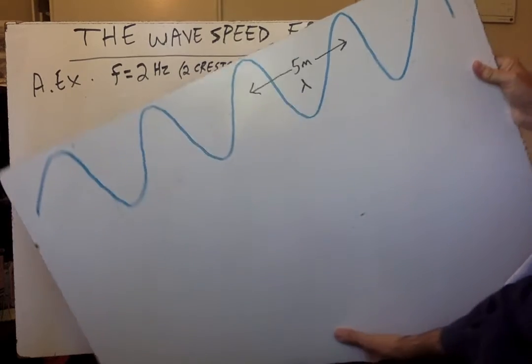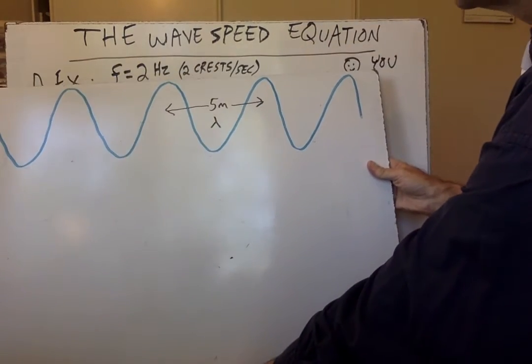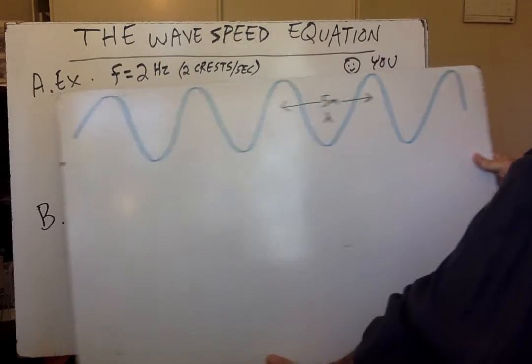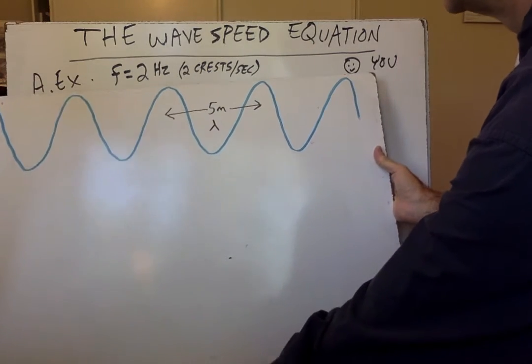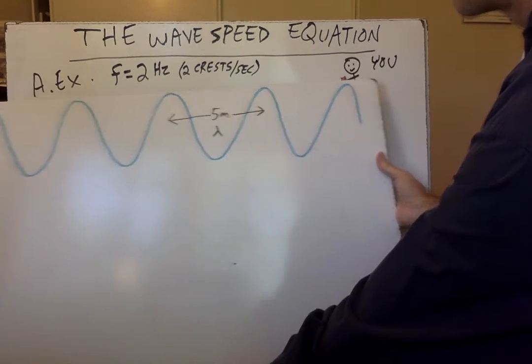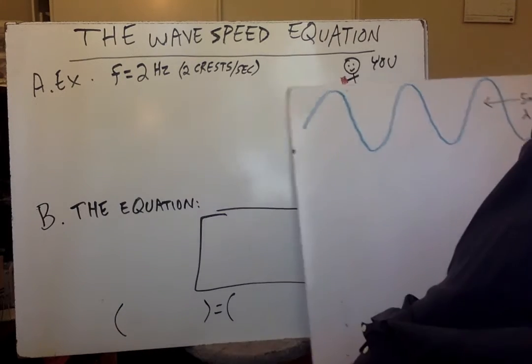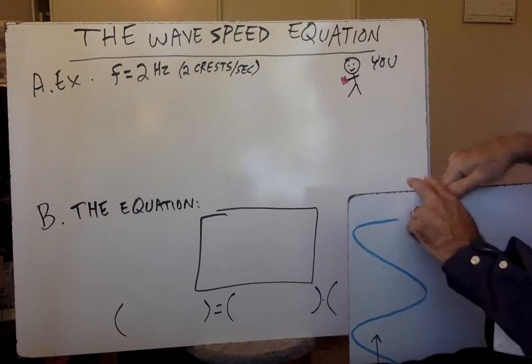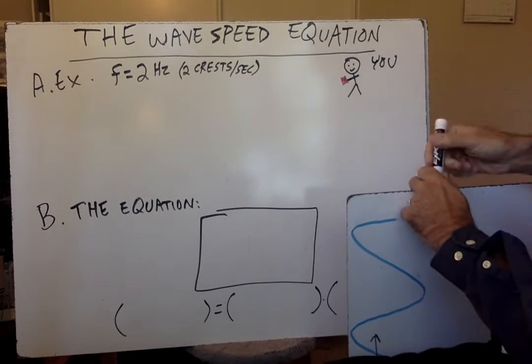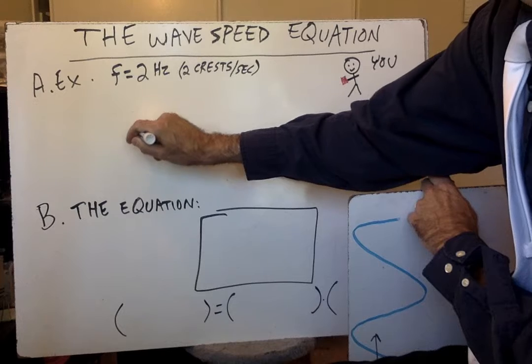So that would look something like this. So we'll do 2 crests per second. So we'll do that one more time. 2 crests per second pass under you. That's what it looks like. And the question that you're asked is what's the speed of this wave?